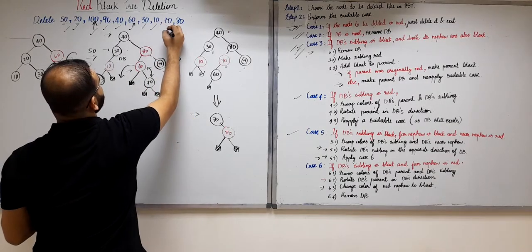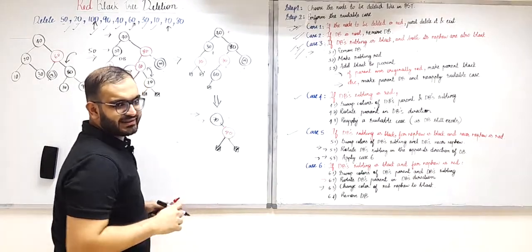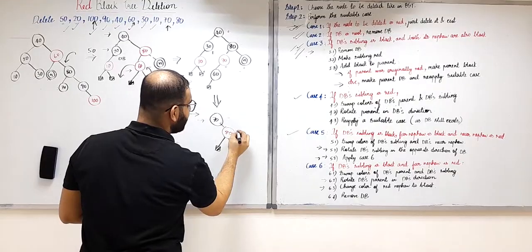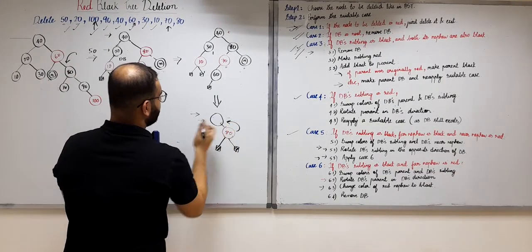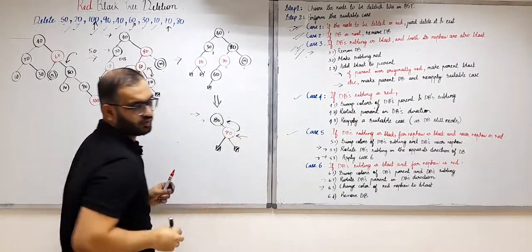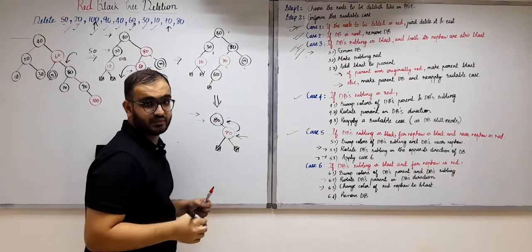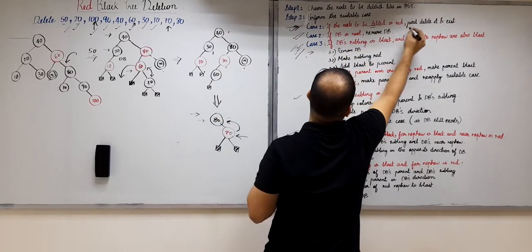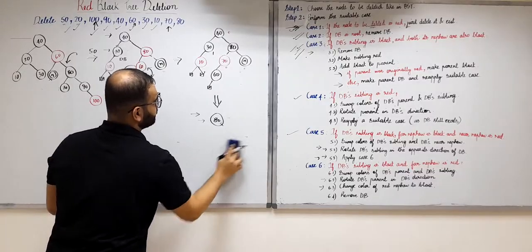The next element to be deleted is 70. We cannot directly delete this internal node, so it gets replaced by its child. This node becomes 80 and we have to delete the child. Since the child is a red node, according to Case 1 — if the node to be deleted is red, just delete it and exit — we delete this node.